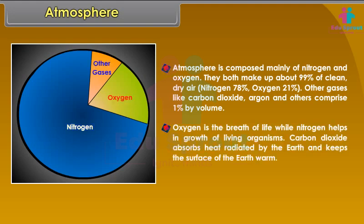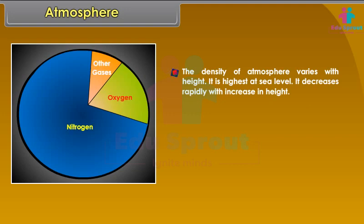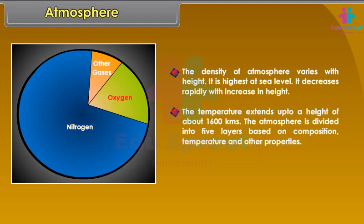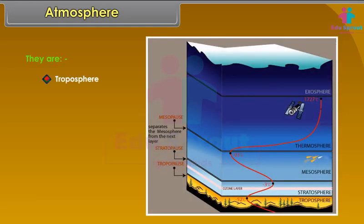Oxygen is the breath of life, while nitrogen helps in the growth of living organisms. Carbon dioxide absorbs heat radiated by the Earth and keeps the surface warm. The density of atmosphere varies with height — it is highest at sea level and decreases rapidly with increase in height, extending up to about 1,600 km. The atmosphere is divided into five layers based on composition, temperature and other properties: troposphere, stratosphere, mesosphere, thermosphere, and exosphere.